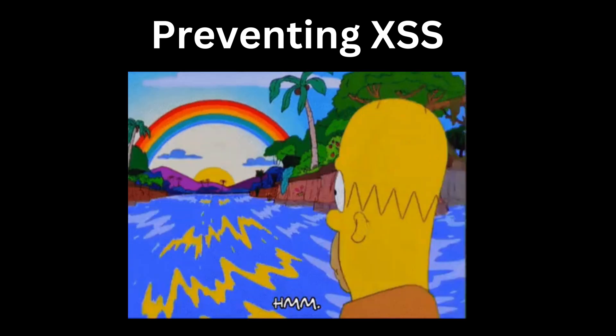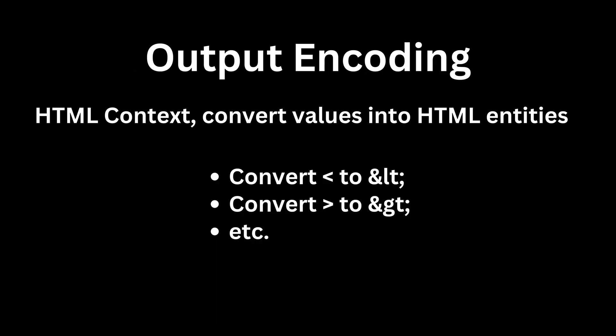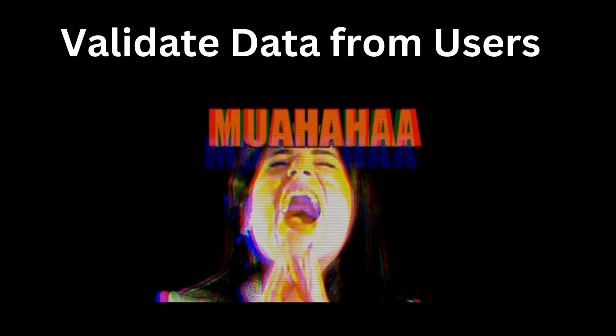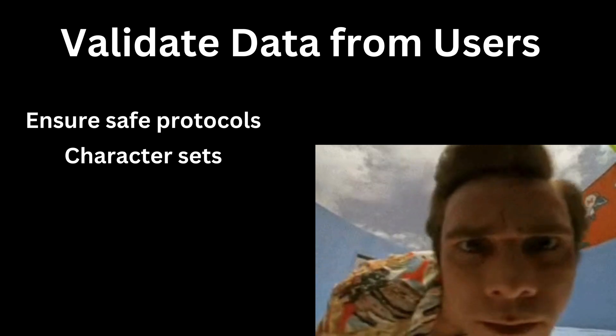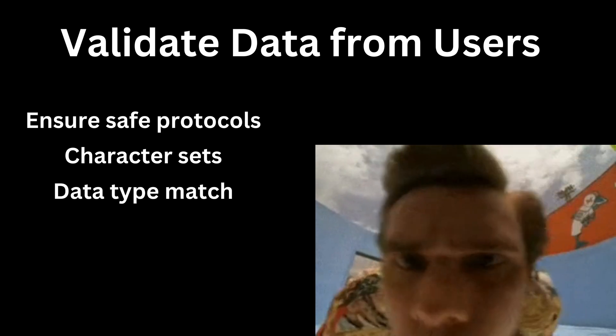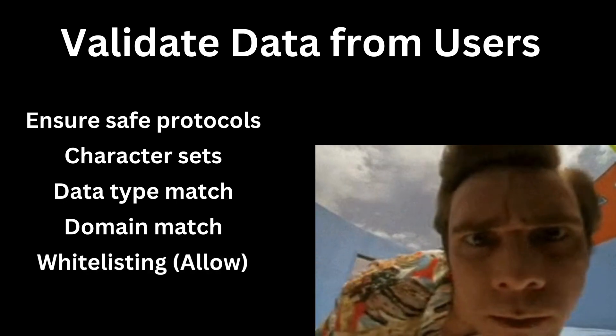There are two main ways to prevent cross-site scripting: encoding and validation. Encoding data on output should be performed on untrusted data before it's written to a page, and the location on the page determines the kind of encoding required. Validation is crucial for any data coming from users — every piece of data should be thoroughly checked to ensure it meets required standards. If data validation fails, it should be blocked entirely rather than attempting to clean or sanitize it.